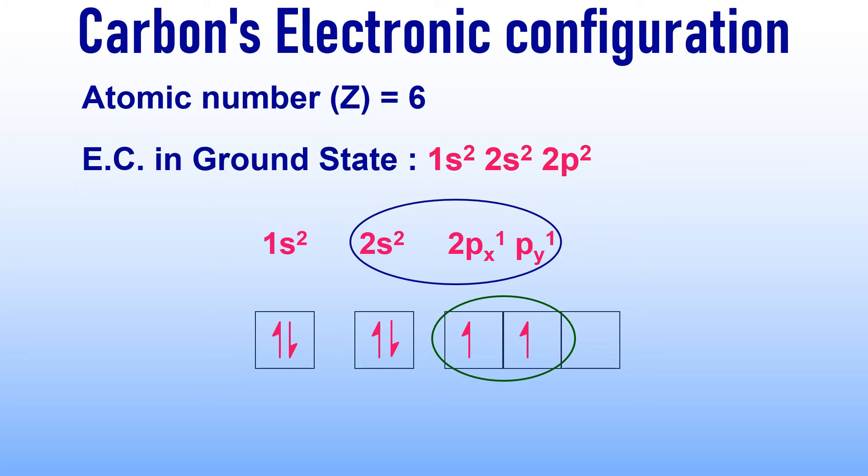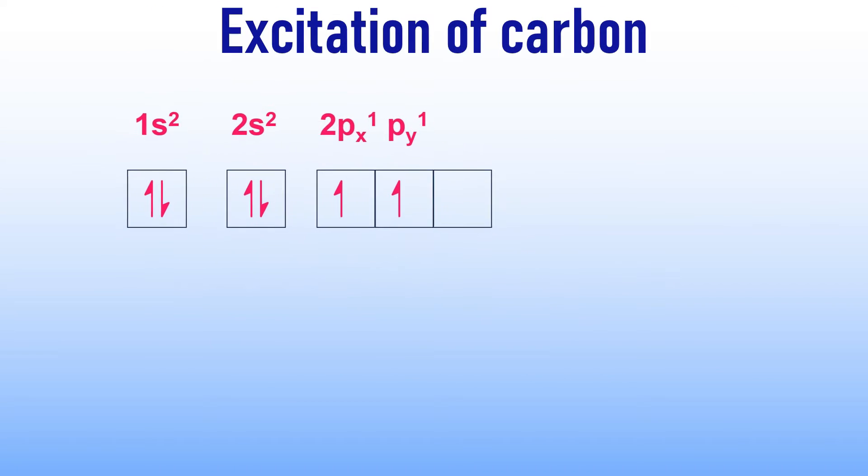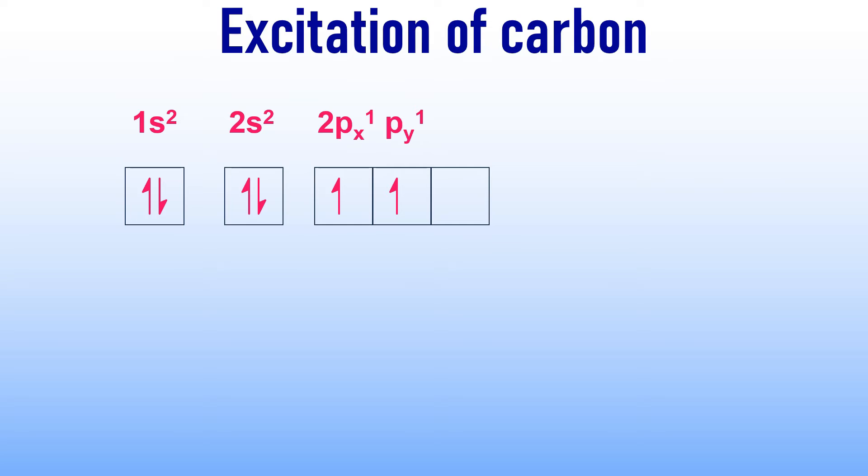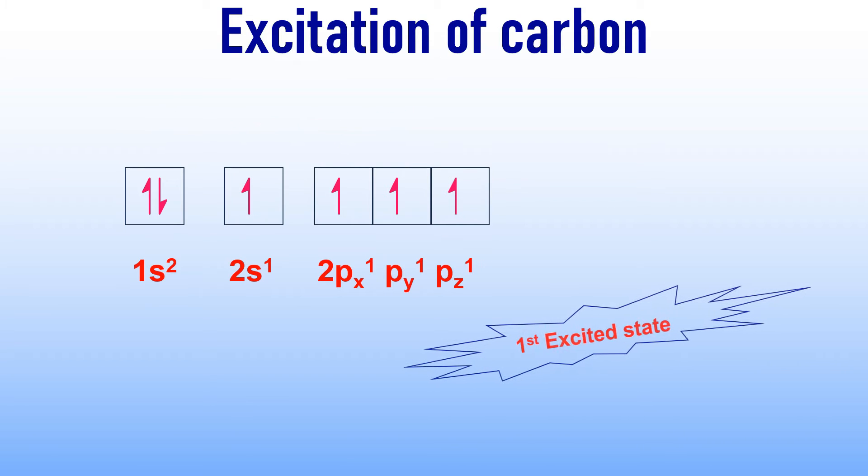To form 4 typical covalent bonds, an atom typically requires 4 unpaired electrons. To achieve this, carbon undergoes excitation. When carbon atom gets sufficient energy, one of the electrons from 2s orbital gets unpaired and jumps into the empty 2pz orbital.